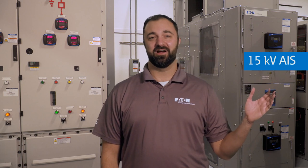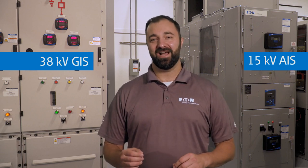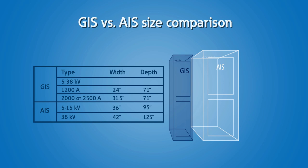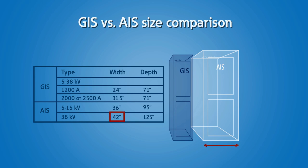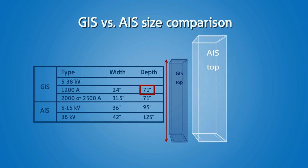Looking to my left, you will see a lineup of air-insulated switchgear, and to my right, gas-insulated switchgear. One major difference between AIS and GIS is footprint. For the 5–38,000-volt GIS structure shown, the 1,200-amp GIS structure is roughly 24 inches wide, and the 2,000 or 2,500-amp structure is roughly 31.5 inches wide. The 5–15 kV AIS switchgear here has a common width of 36 inches for all bus ratings. AIS switchgear at 38 kV is typically 42 inches wide. Comparing depth, GIS is roughly 71 inches deep for all voltage classes, but AIS gear is 95-plus inches deep depending on the voltage class and rear compartment configurations.